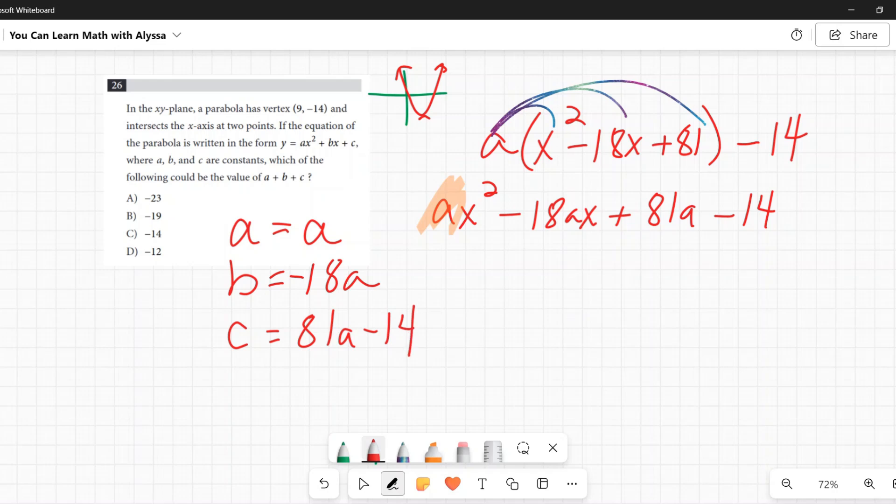Now they say, which of the following could be the value of a plus b plus c? So I need to add all of these together. So a plus a negative 18a plus 81a minus 14.